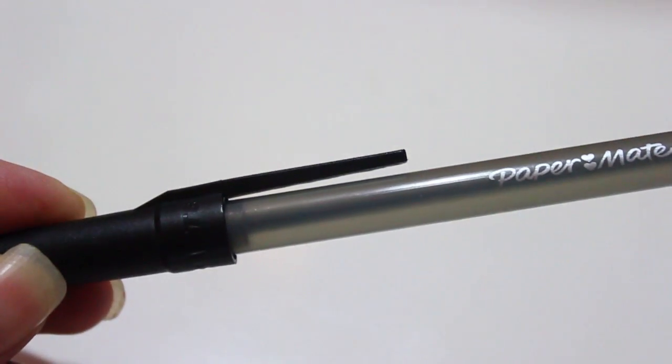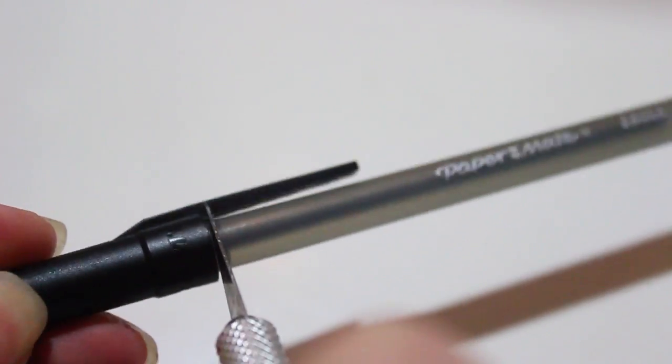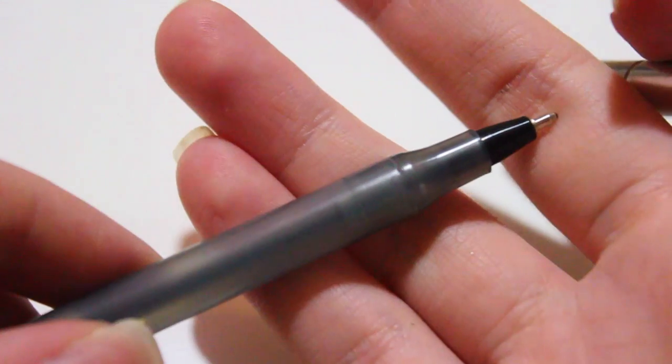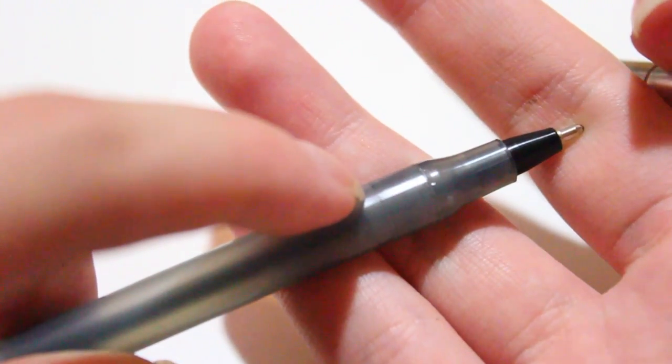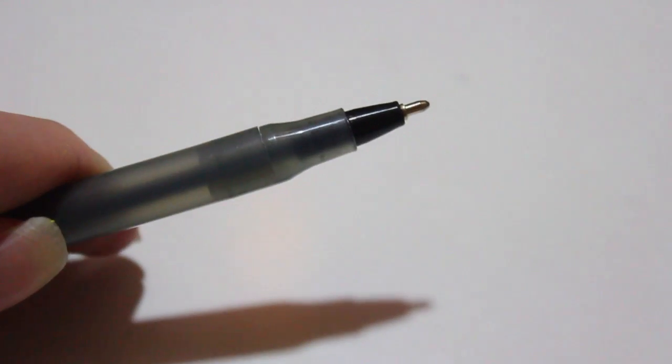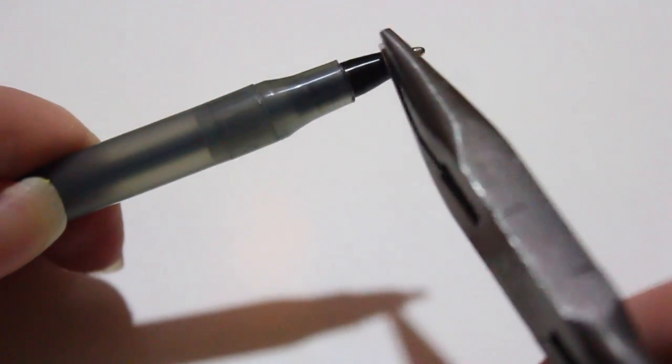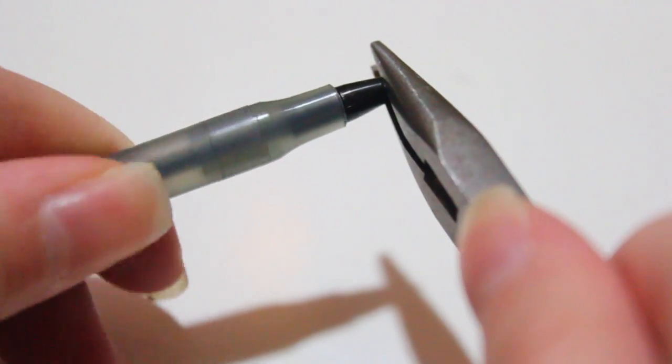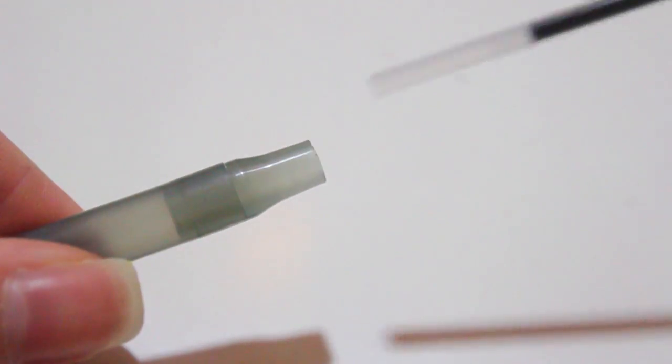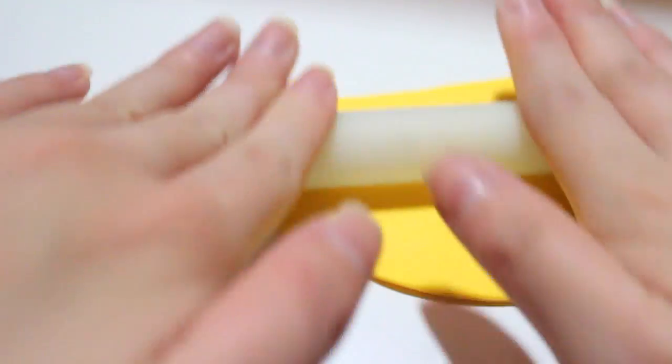So the first thing we are going to do is we're going to mark the pen. You guys may not be able to see it, but there is a thin line right there. So I know that's where I'm going to stop my clay. I am taking some pliers to also pull out the ink portion. So just slowly wiggle and pull out. You're going to roll out your clay and you want to make sure it's thin so that your cap can still fit on the pen after you bake it.